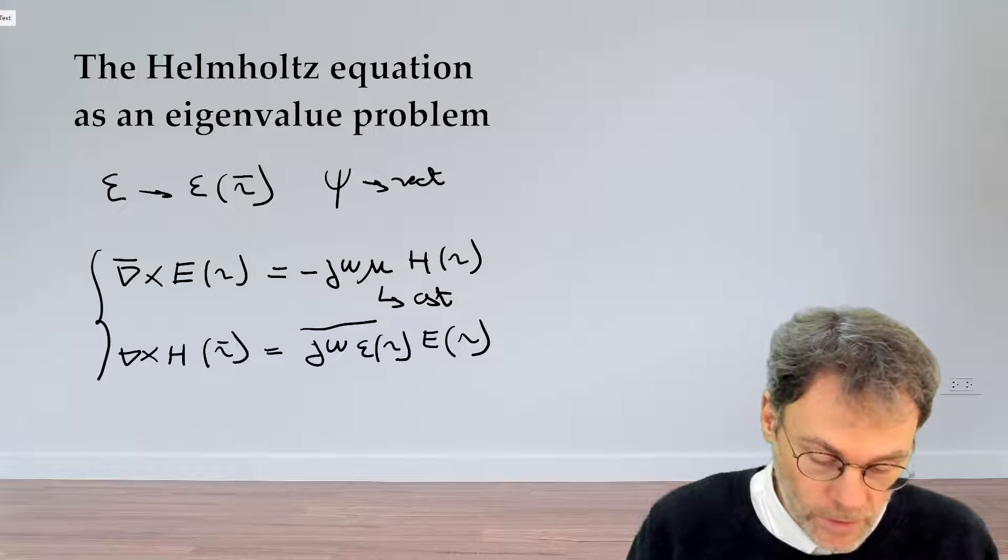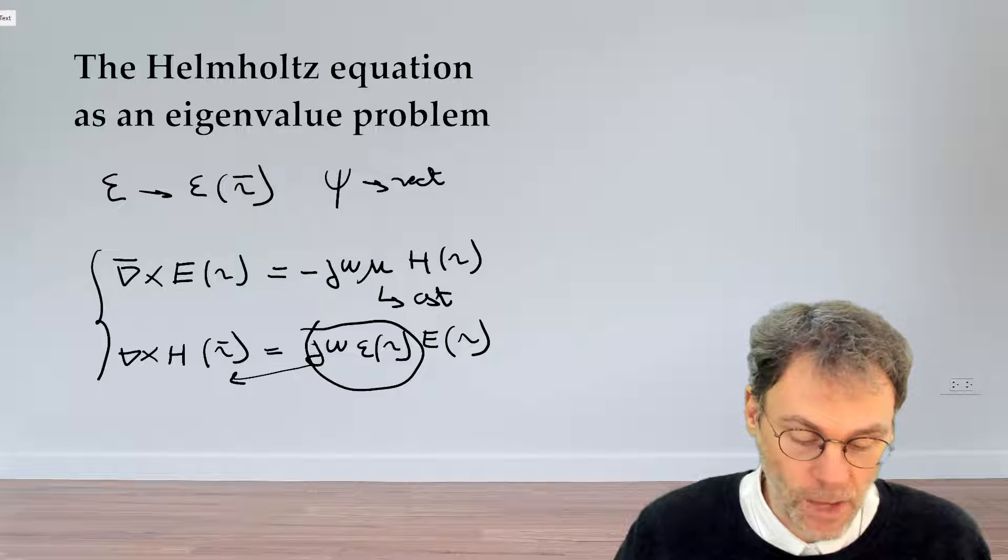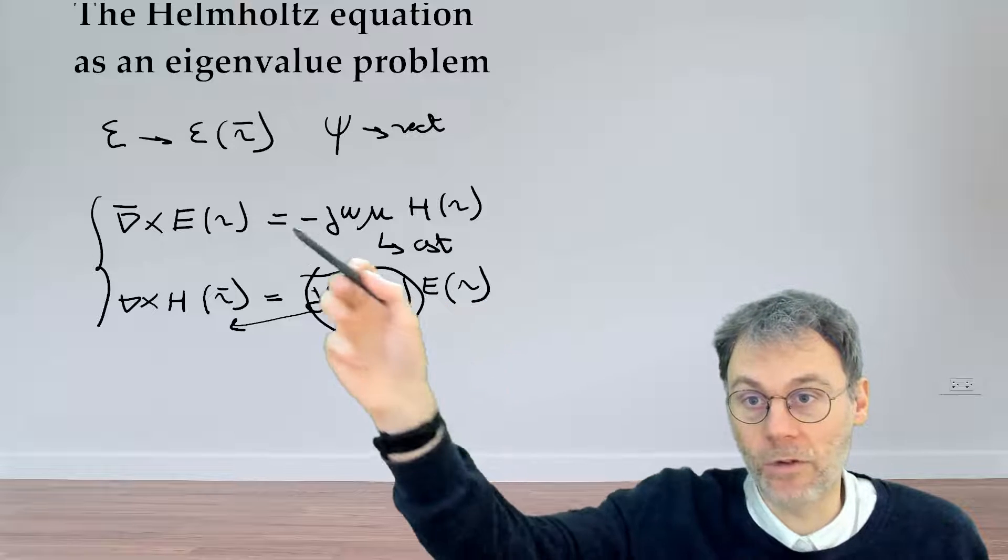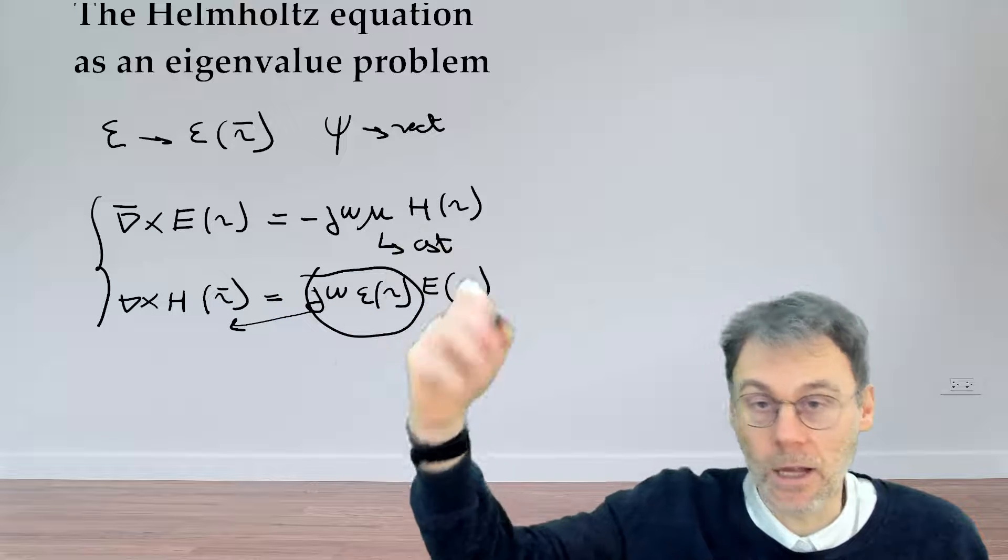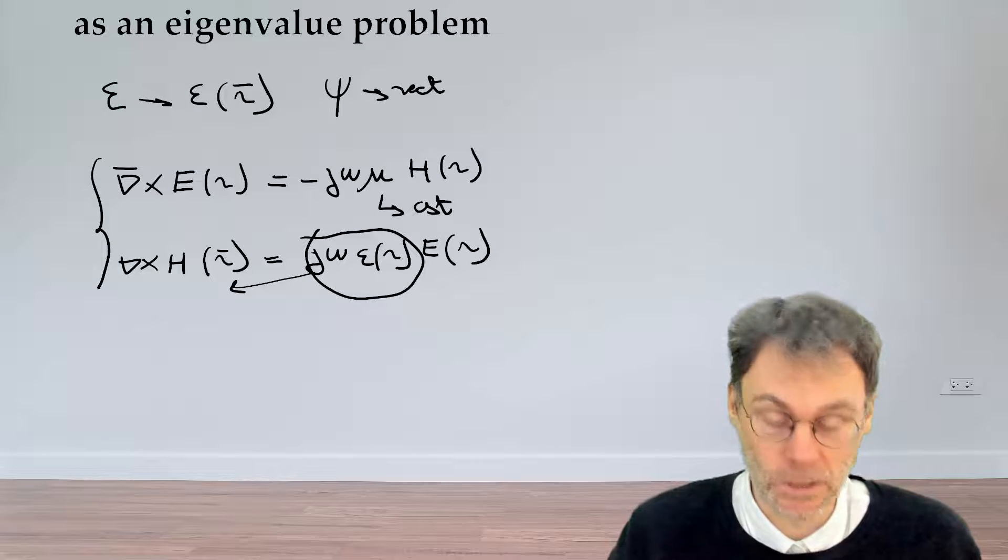So what we can do is obviously bring this thing to the left hand side. So if we divide everything by j omega epsilon, then we can isolate the electric fields. And if we plug that in the first equation, then we have a single equation which only involves the magnetic field. So let's do that.